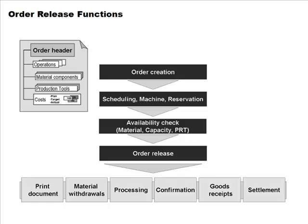Once you release the order, a lot of things become possible — none of these things is possible before an order is released. For example, you cannot print documents for the order, cannot withdraw materials against the order, cannot carry out actual work, cannot enter confirmations, cannot send finished goods back to the warehouse, and cannot settle the order. All of these are controlled by the 'released' status — an important point in the life cycle of an order.